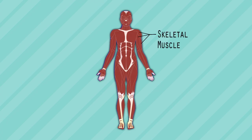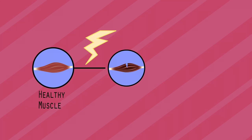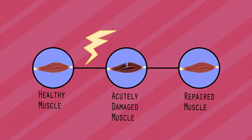Skeletal muscle is a unique tissue in the body because it has a large regenerative capacity. This means that after damage, muscle fibers can repair themselves efficiently.